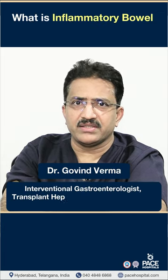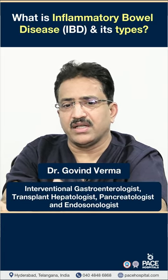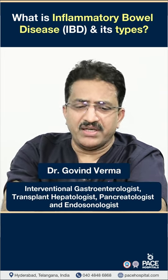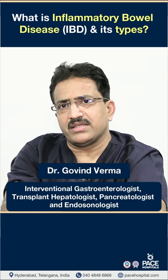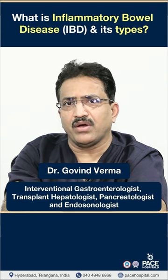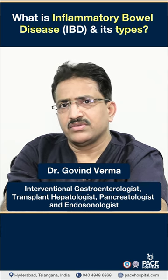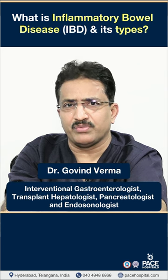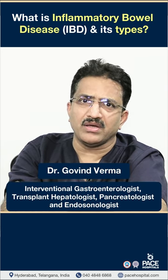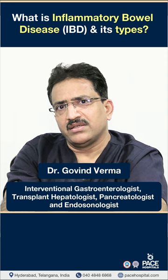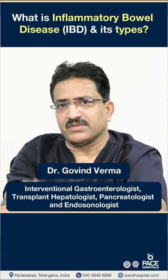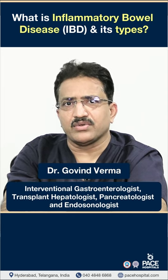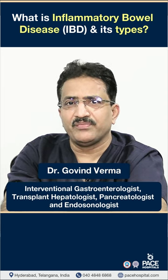Inflammatory bowel disease is divided into two types: ulcerative colitis and Crohn's disease. The big difference between them is the involvement of the gut. Ulcerative colitis involves only the colonic mucosa, whereas Crohn's disease can involve any part of the gut from mouth to anus.